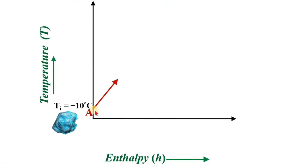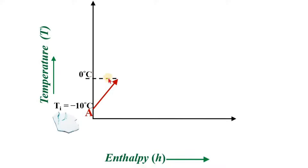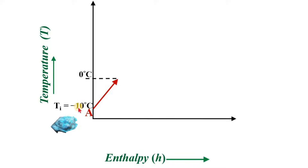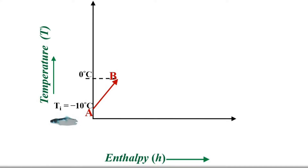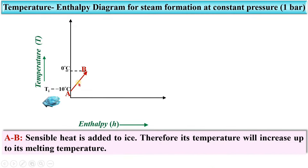Let us call this point A. If you supply some amount of heat, the temperature will rise and it will reach 0 degrees Celsius, which is point B. So during the process A to B, sensible heat is added to the ice and its temperature increases up to its melting temperature — a rise of 10 degrees Celsius.